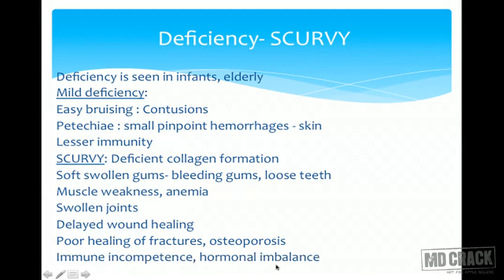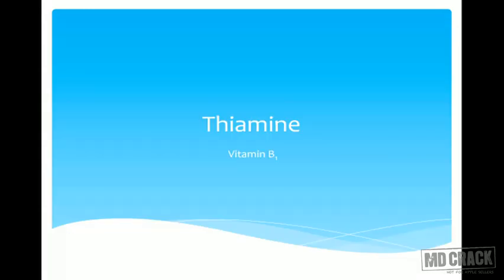Scurvy also causes immune incompetence and hormonal imbalances, since hormones such as adrenaline, noradrenaline, and corticosteroids require vitamin C for their synthesis. This concludes vitamin C. Now let us move to the next water-soluble vitamin — thiamine.